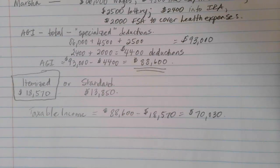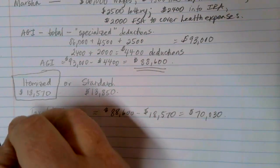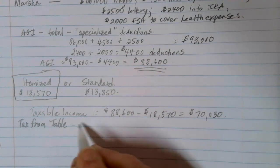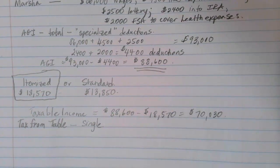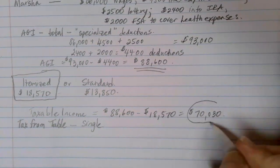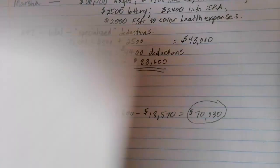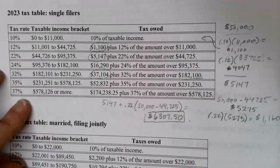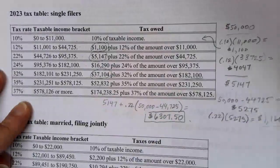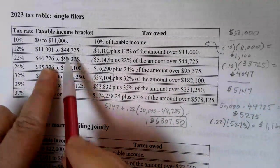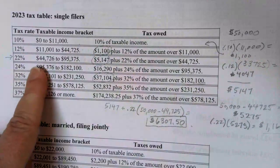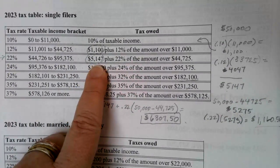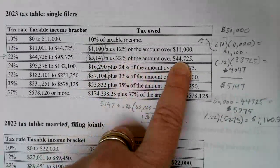At this point, it's time to figure out the taxes. We're going to look at the tax from our table, keeping in mind that Marsha is a single filer. We're looking for an income of $70,030. Looking at the single filers table, $70,030 falls in the 22% tax bracket, which calls for $5,147 plus 22% of the amount over $44,725.